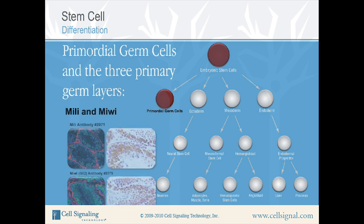In the figures below, IF and IHC analysis was performed showing Millie and MeWe expression in mouse testis. In the IF panels, Millie and MeWe antibodies have been labeled green. Pankeratin C11 mouse monoclonal antibody, product number 4545, has been labeled red. DNA has been labeled blue with DRAC-5. In the IHC panels, note the presence of brown stain with each of the antibodies.